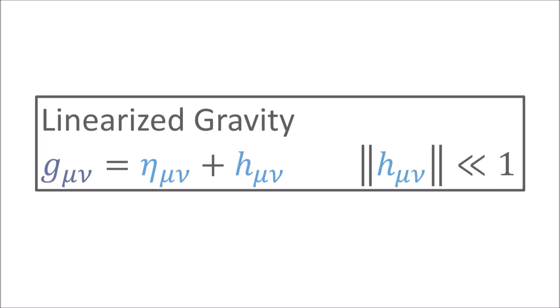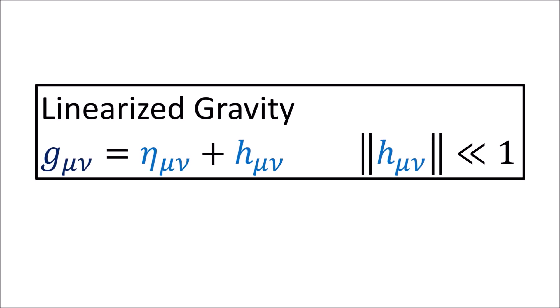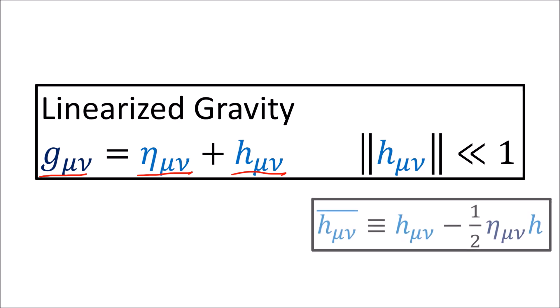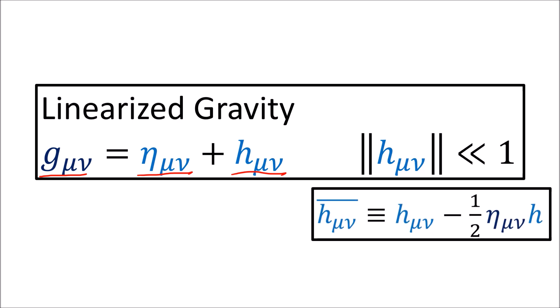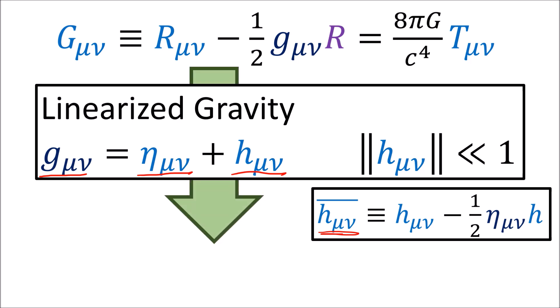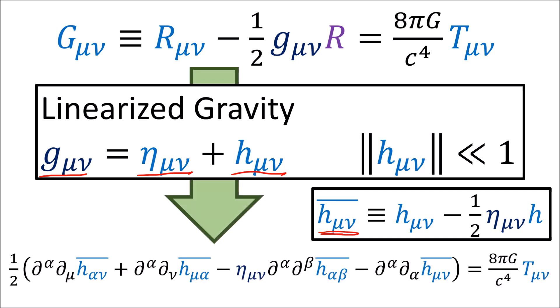Just to review what we've covered so far: we started with the assumption of weak or linearized gravity, where the metric g is equal to the flat metric eta plus a small change h. And defining h-bar like this, we rewrote the Einstein field equations in linearized gravity.